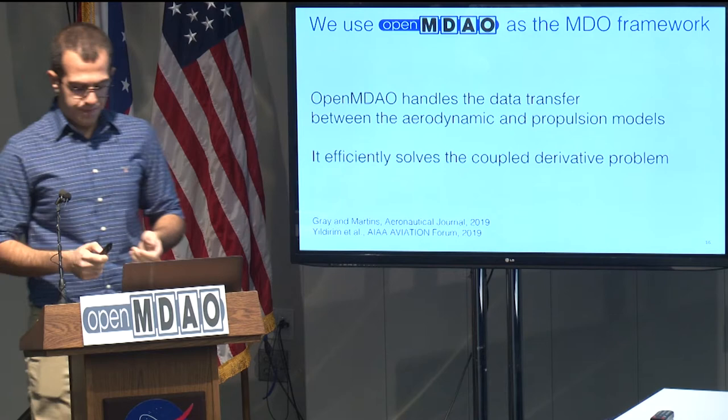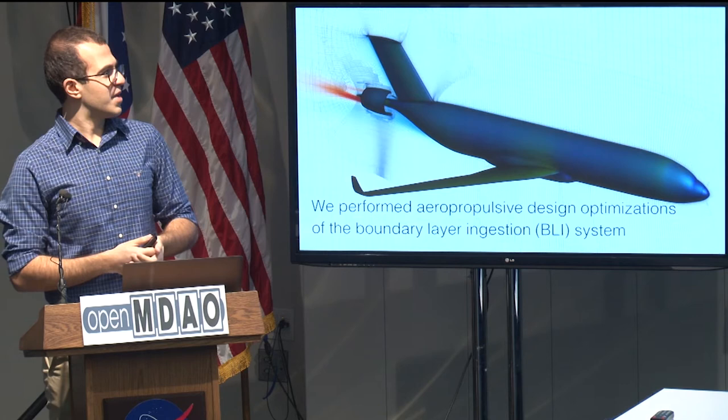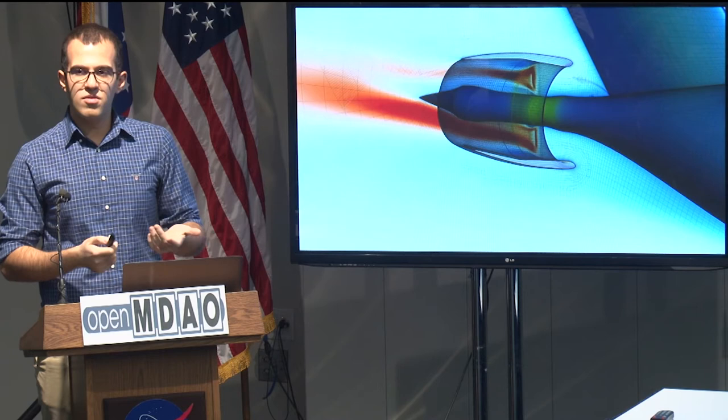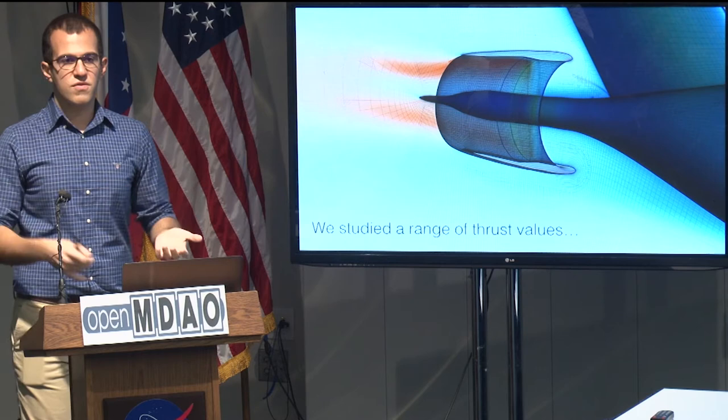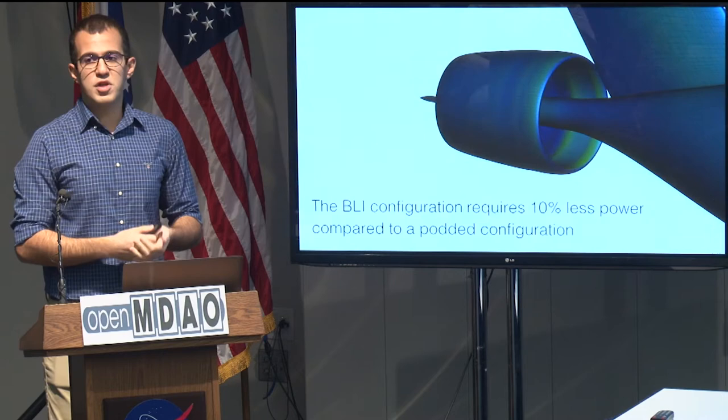At one point, Justin told me to stop doing any research and get him a movie, so I got him a movie — that's why we have to see it at every presentation I'm giving. This movie briefly summarizes the work we did with the STARC-ABL. We wanted to study design at a range of different operating points. We studied a range of thrust and fan pressure ratio values for the BLI fan, and studied how much shaft power we would need to operate the BLI fan.